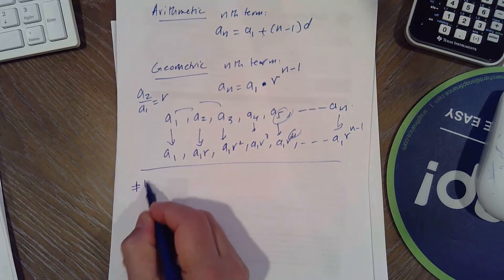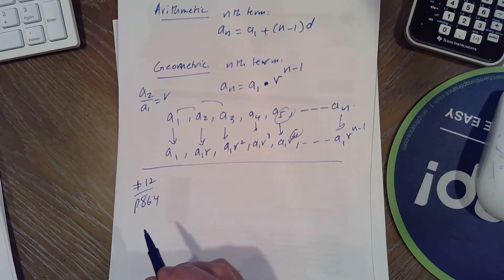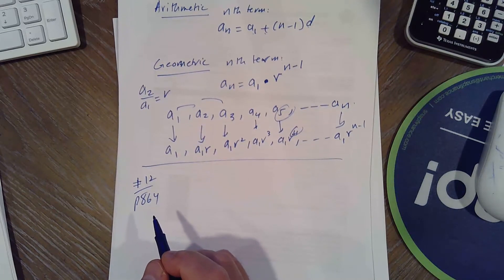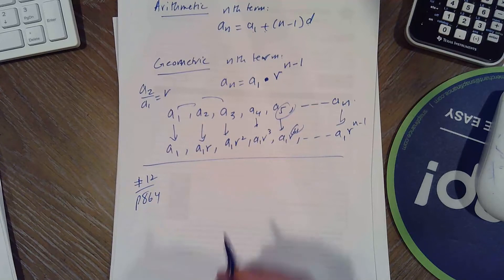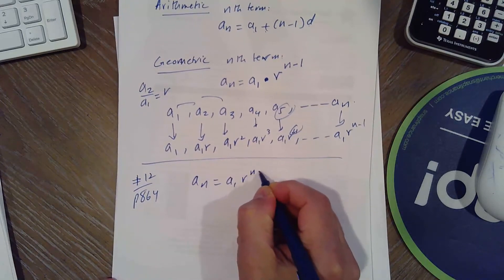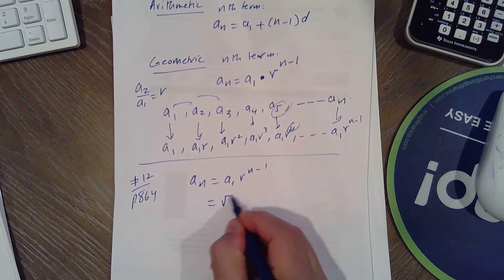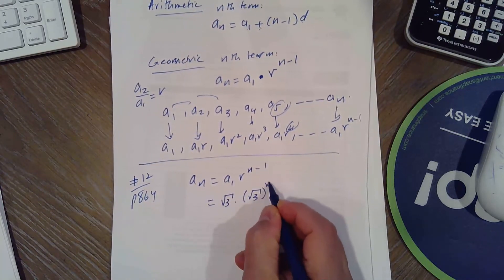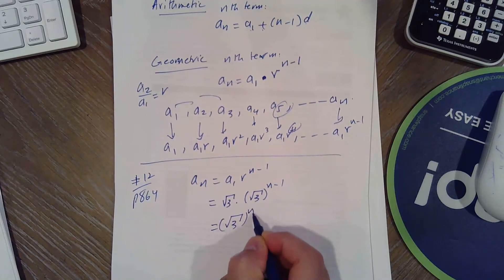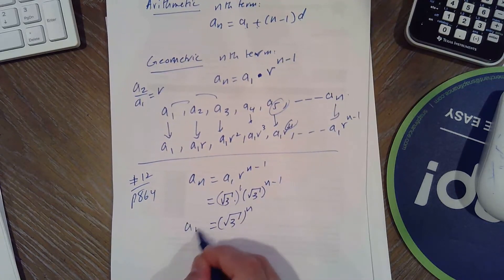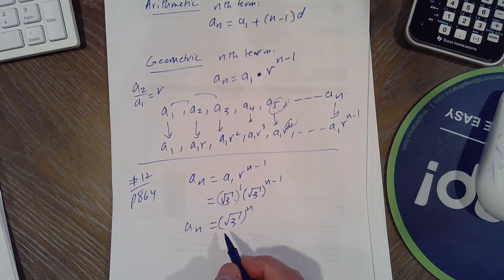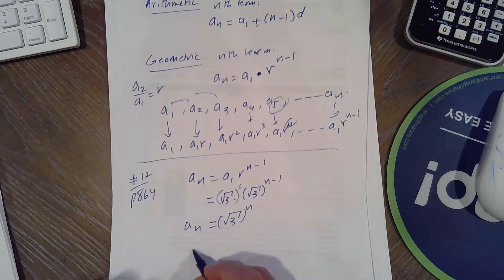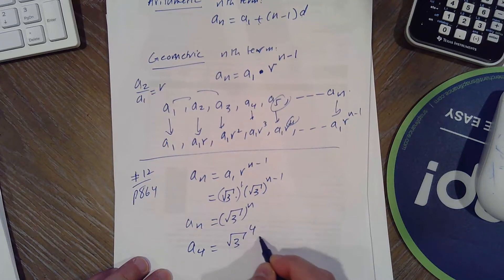Problem 12, page 864: find the nth term of the geometric sequence with first term a₁ = √3 and common ratio r = √3. Using aₙ = a₁·rⁿ⁻¹, that gives √3 · √3^(n-1) = √3^n. They want the fourth term, so a₄ = √3^4 = 9.